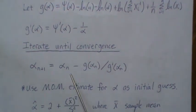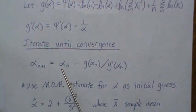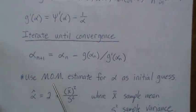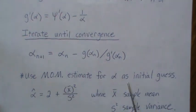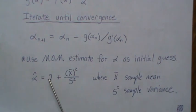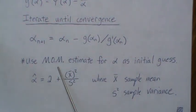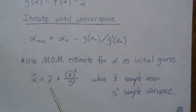Now, how do we use an initial guess? Where do we start? One approach is to use the method of moments estimate for alpha as an initial guess. And I have another video called method of moments for an inverse gamma distribution.